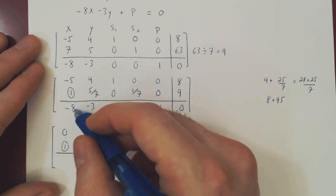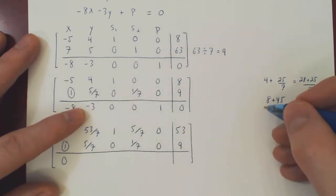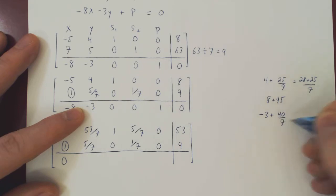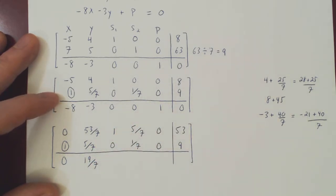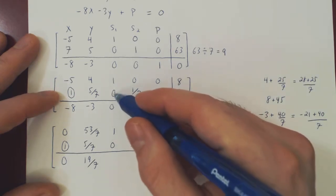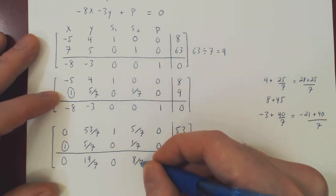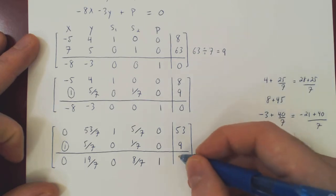Let's kill now the negative 8 by doing row 3 plus 8 of row 2. So negative 8 plus 8 is 0. Negative 3 now, plus 8 times 5 over 7. 5 times 8 is 40, so plus 40 over 7. 3 will give us negative 3 times 7, negative 21, plus 40 over 7. But negative 21 plus 40 is 19, so we get 19 over 7. 0 plus 8 times 0 is 0 plus 0, which is 0. 0 plus 8 times 1 over 7, 8 over 7. 1 plus 8 times 0 is 1 plus 0, 1. And 0 plus 8 times 9, 72 plus 0, 72.